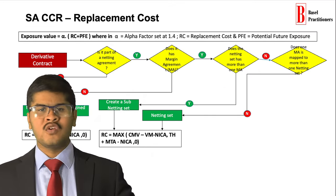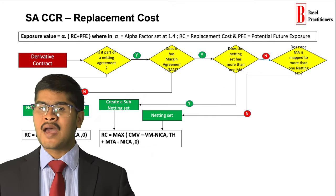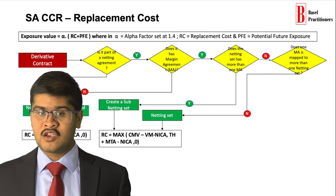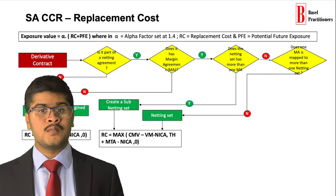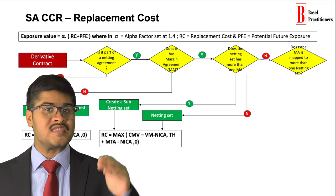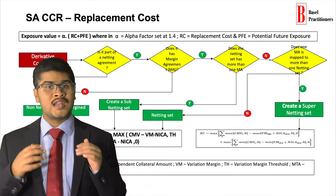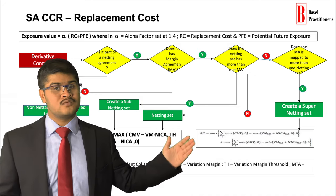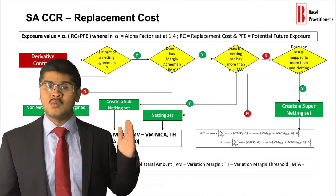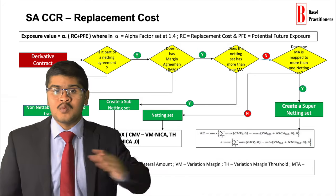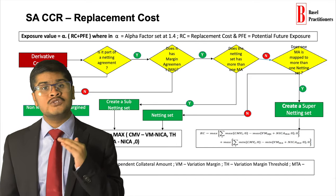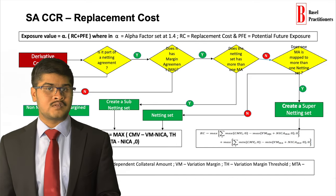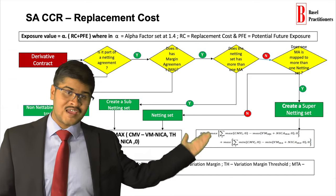Now, let us see another scenario: whether one MA is mapped to more than one netting agreement. If the answer is no, then the computation happens at the netting agreement level. In another scenario, if one MA is mapped to more than one netting agreement, then we need to create a subnetting agreement and apply the most complex formula for the replacement cost. The formula appears complex, but if we understand the acronyms of the variables, it is quite simple.